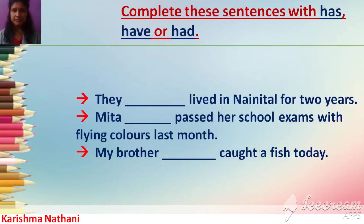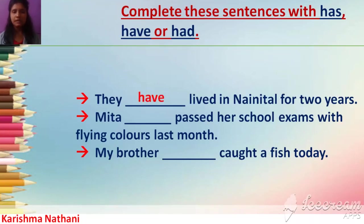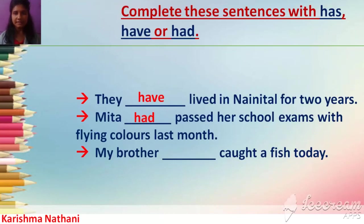Complete these sentences with 'has', 'have', or 'had'. 'They ___ lived in Nainital for two years.' 'They' is a plural form, so we use 'have': 'They have lived in Nainital for two years.' 'Meeta ___ passed her school exams with flying colors last month.' 'Last month' indicates past, and 'Meeta' is singular, so the answer is 'had': 'Meeta had passed her school exams with flying colors last month.'